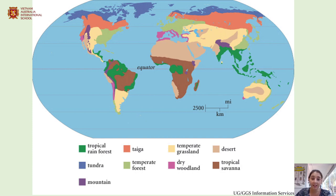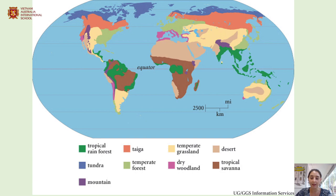We have temperate forests — where I'm from in the UK that's what most of our woodland looks like, very similar to rainforests but just different species of trees. We have areas of dry woodland where trees are growing but in very dry conditions. We have tropical savannah, which is grassland — this is where lions, elephants, and antelope live. And finally we have mountainous regions which can vary in the types of habitats present there.